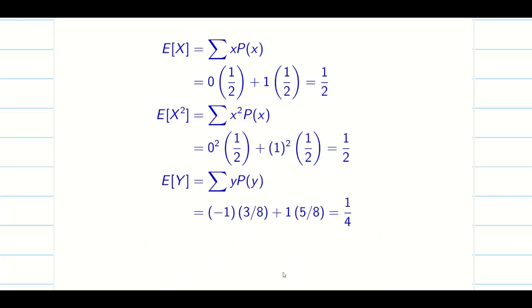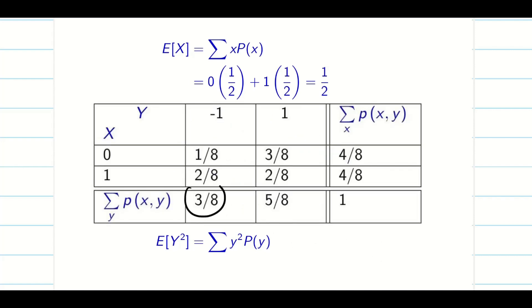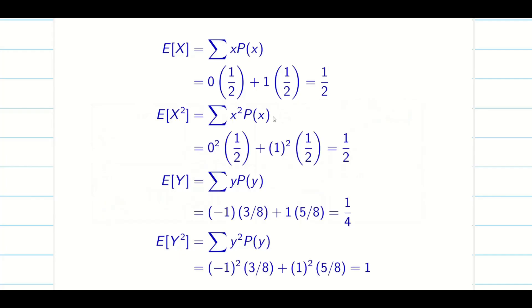The same thing. When you take square on Y, this will become minus 1 square, which is simply 1. So we will be getting 3 by 8 plus 5 by 8. That is what is mentioned in the table: 3 by 8. Now we can get the answer easily.